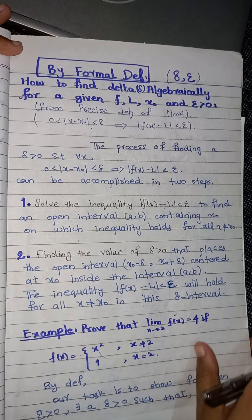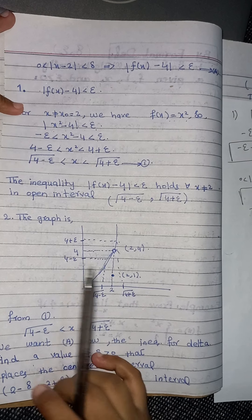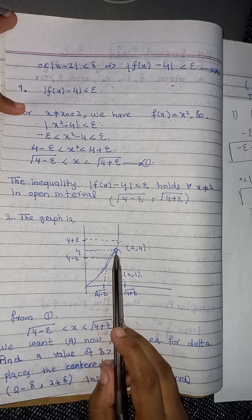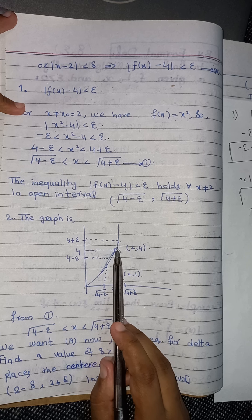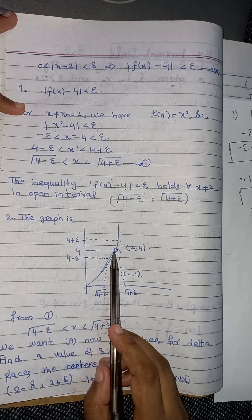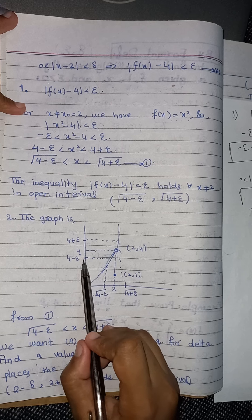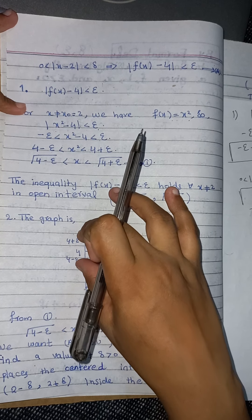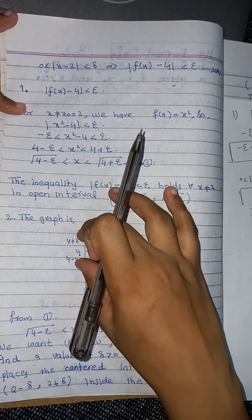If we elaborate this graphically, here is the functional value. At x equals 2 there is a hole because the function is not defined as x squared there. Here is the delta interval on the left, the delta interval on the right, and the other interval. Our limiting value lies in this epsilon interval, and our x values lie in the delta interval.